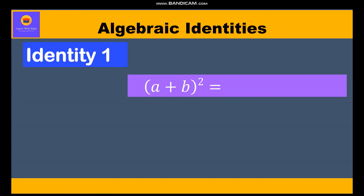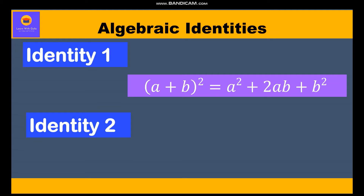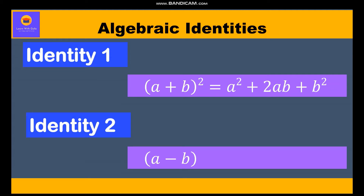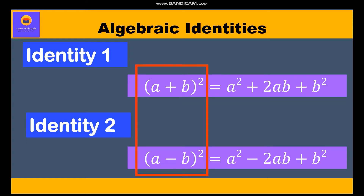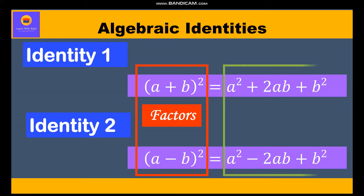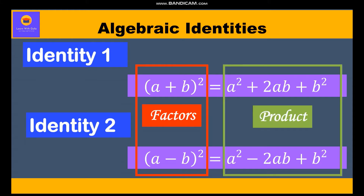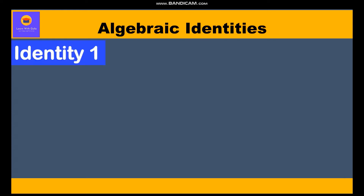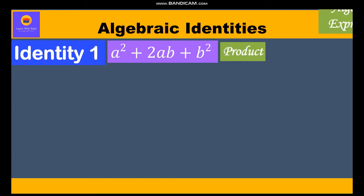Identity one is (a + b)² = a² + 2ab + b². Identity two is (a - b)² = a² - 2ab + b². If you observe, in each of these two identities the left-hand side shows the factors and the right-hand side shows the product in the form of an algebraic expression.